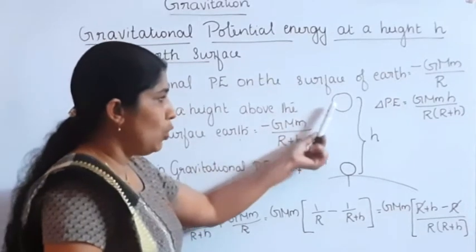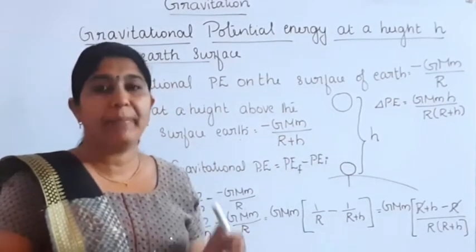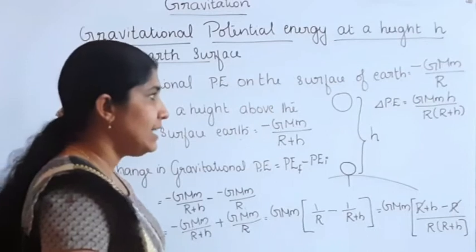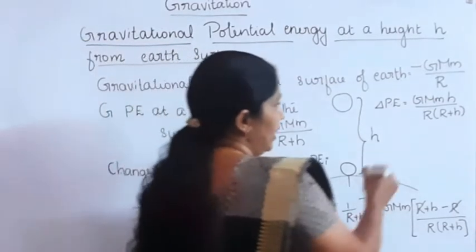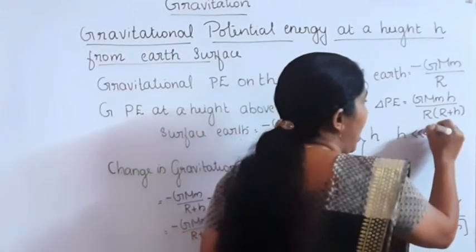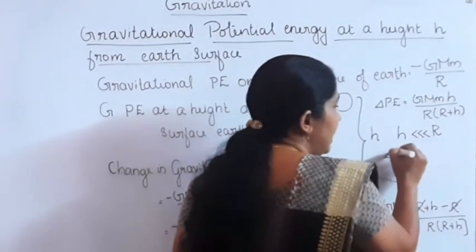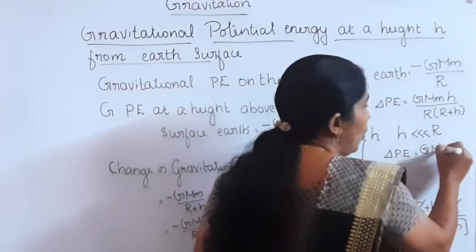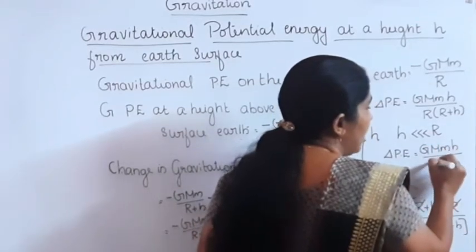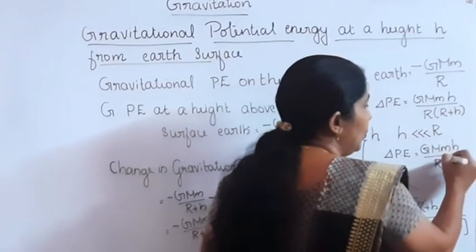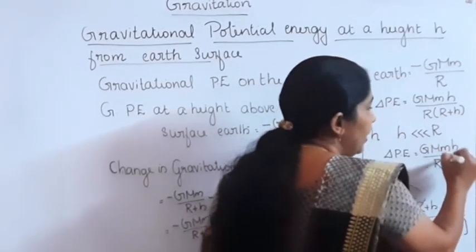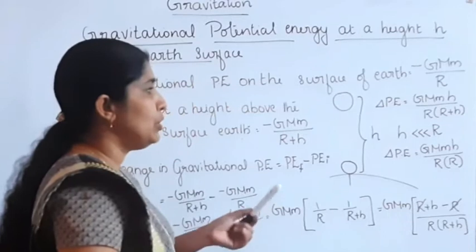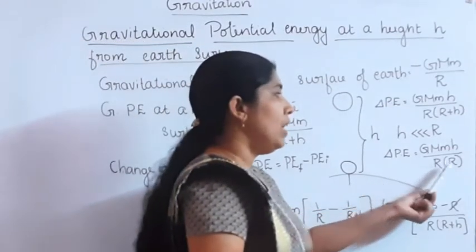Now, if the height of the body is negligibly small compared with the radius of the Earth — that is, h is very much less than R — then R plus h is approximated to R. So h is neglected, and R plus h becomes R. Therefore, R into R plus h becomes R into R, which equals R squared.